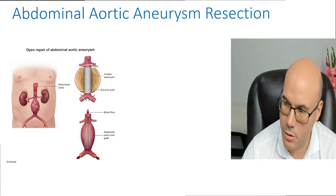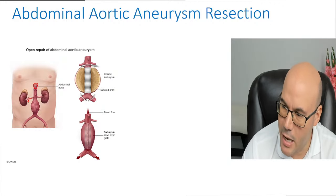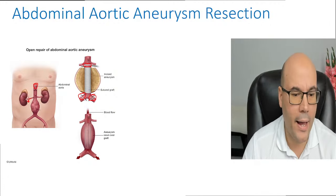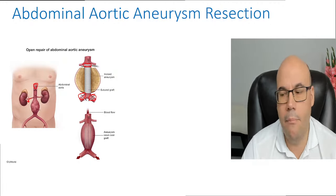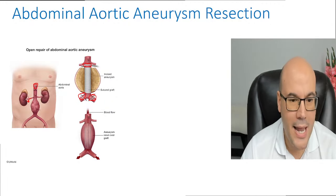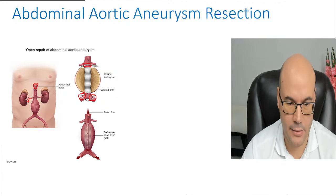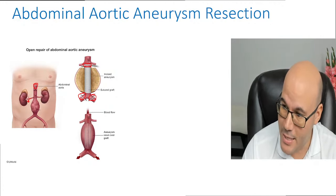An aortic aneurysm resection begins with a proximal and distal clamp — you can see it here in the image. Why do they use proximal and distal clamps while repairing the abdominal aortic aneurysm? This is done to prevent blood loss and also to facilitate graft placement from the proximal end to the distal end.